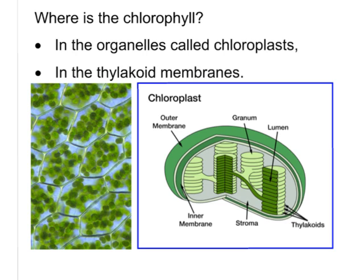So where is this chlorophyll — these plant pigments — located? Chlorophyll, as well as other pigments, are located in organelles called chloroplasts. Here is a picture of some cells showing lots of chloroplasts — all those little green circles are chloroplasts. Looking at a diagram of the chloroplast structure, we can see the outer membrane, an inner membrane, and structures called thylakoids. Thylakoids are very important because within their membranes, pigments are located — specifically chlorophyll and other pigments that carry out photosynthesis.